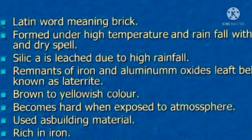In the case of high rainfall, it is called intense leaching. Due to intense leaching, nutrients such as nitrogen, phosphorus, and potassium — along with all other components — are lost. This reduces the fertility of the soil.